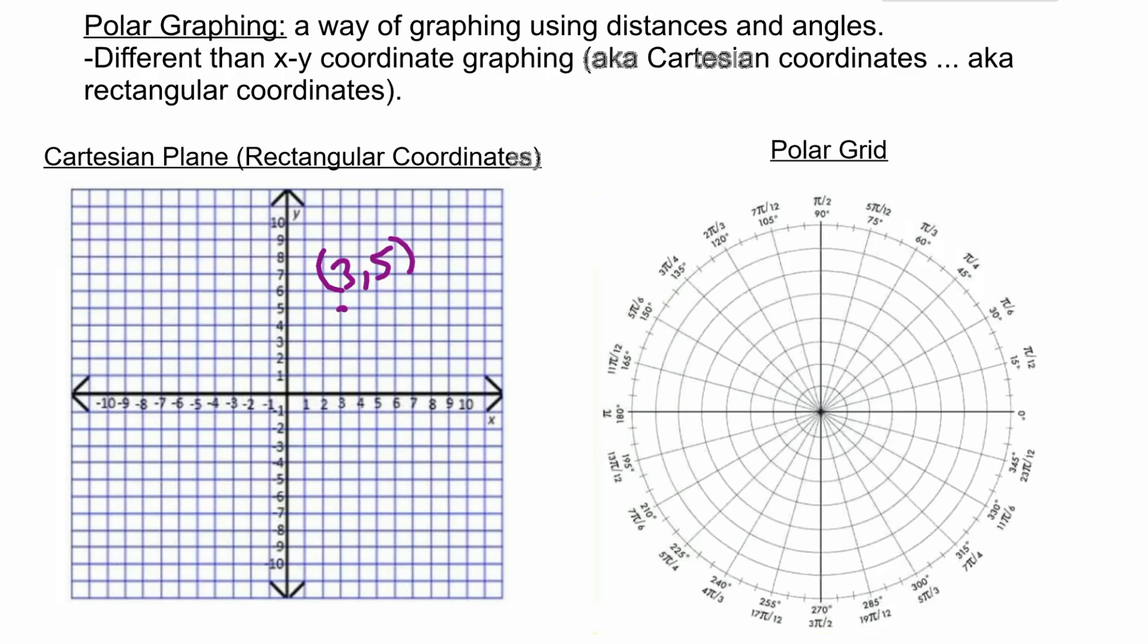In the polar grid, we're going to be graphing using distances and angles. If you're familiar with the unit circle, it looks a lot like the unit circle, just with a bunch of rings in it. This is a completely different graphing system than the Cartesian plane. Let's look at this polar grid system and understand it a little bit.